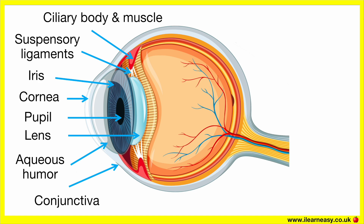Conjunctiva. This is a thin, clear tissue covering the white part of the eye and the inner eyelids. The conjunctiva functions to protect and lubricate the eye, and also acts as a barrier against dust and infection.